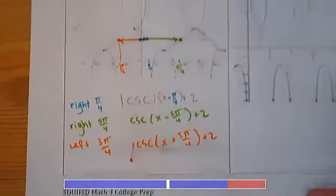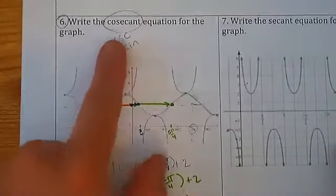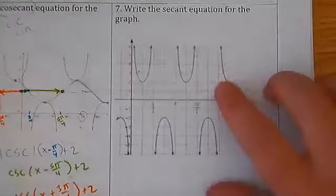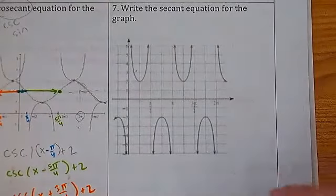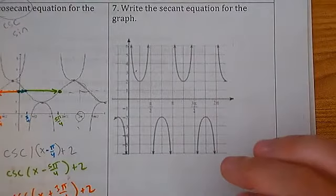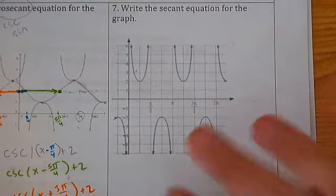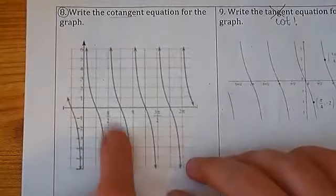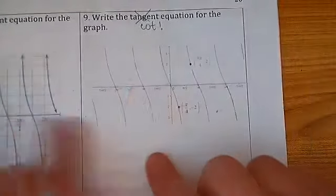That's how you write an equation for secant or cosecant from a graph. For homework, do number 7 along with numbers 3, 4, and 5. Then for the last page, we'll practice writing tan and cotan from a graph. We'll do number 8 together and you'll do number 9.